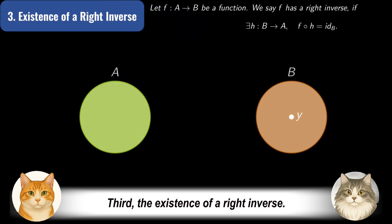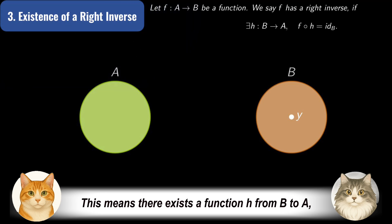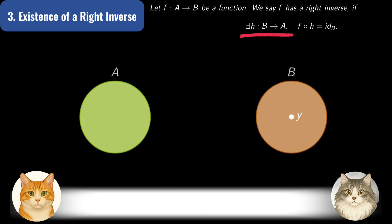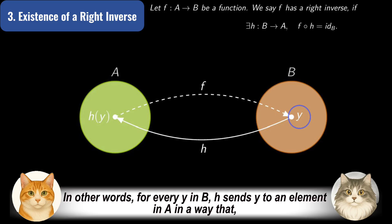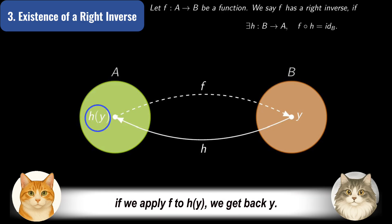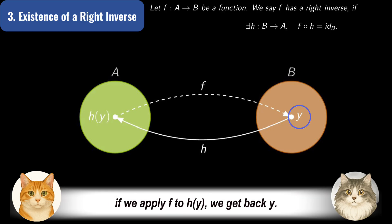Third, the existence of a right inverse. This means there exists a function h from B to A such that composing f with h gives the identity function on B. In other words, for every y in B, h sends y to an element in A in a way that, if we apply f to h(y), we get back y.